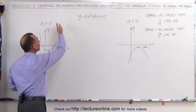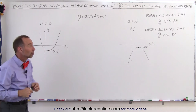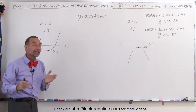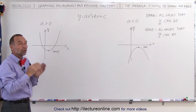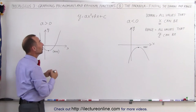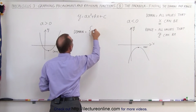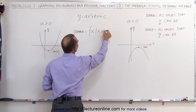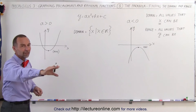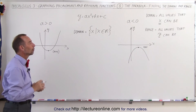If I go up far enough in the y-direction, will the parabola keep going to the right indefinitely? In other words, will it go out to positive infinity on the right and negative infinity on the left? The answer is yes. There's no restriction at all to the x-value in a parabola whether it opens upward or downward. Therefore, the domain is all x-values such that x is an element of the real number set — there's no restriction whatsoever.